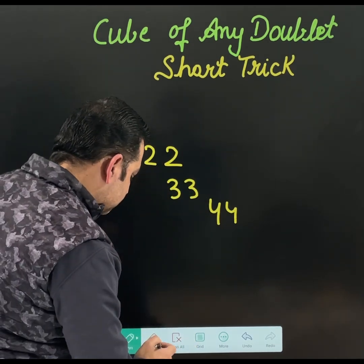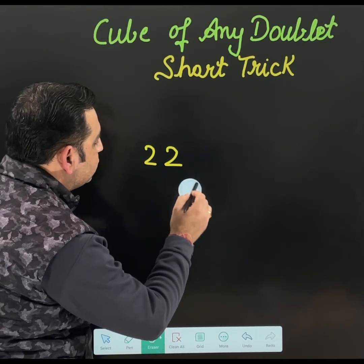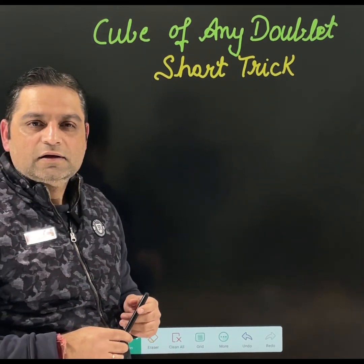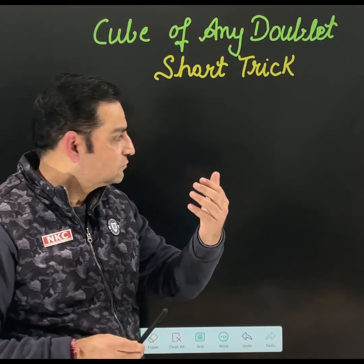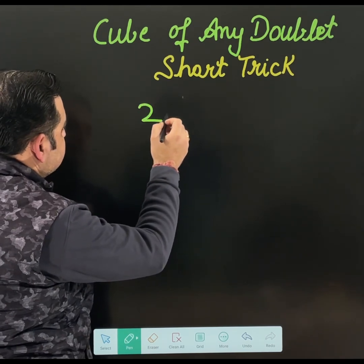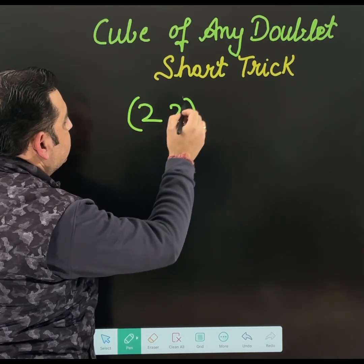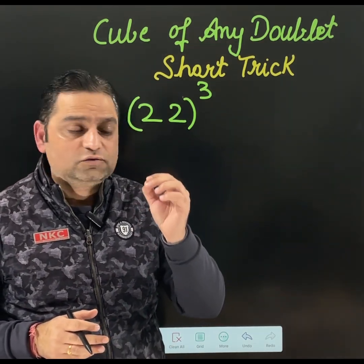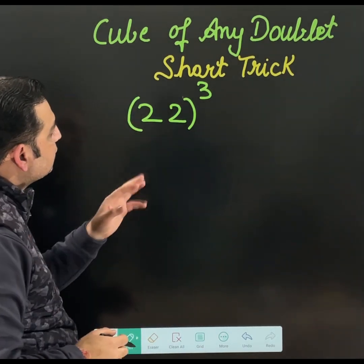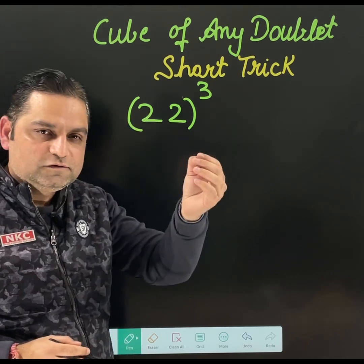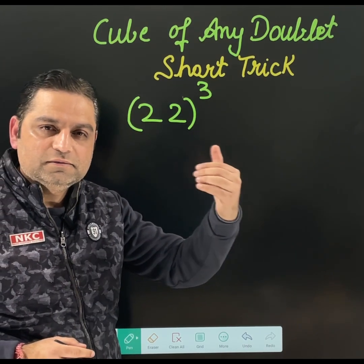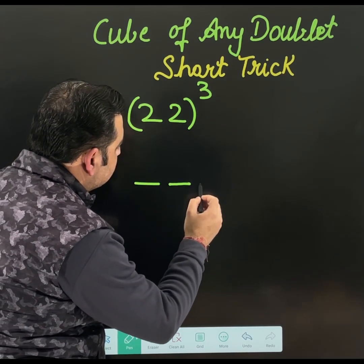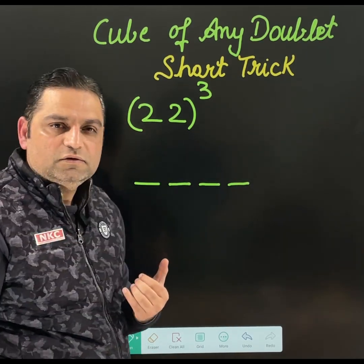Now finding cube of them using a shortcut is going to be very interesting and time-saving as well. I am going to start with 22 cube. Try to learn it carefully. What is 22 cube? See, my main digit is 2 here, it is getting repeated. Make 4 spaces. I have made 4 spaces first of all.